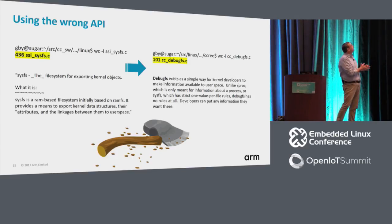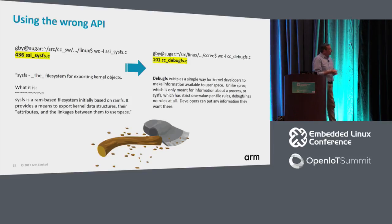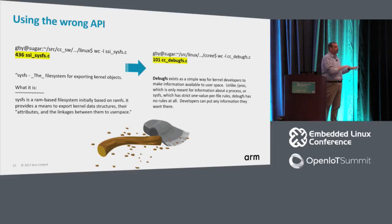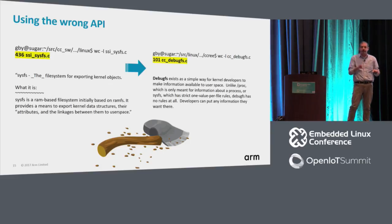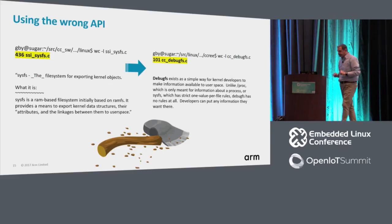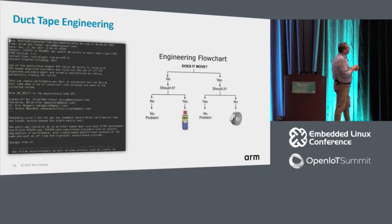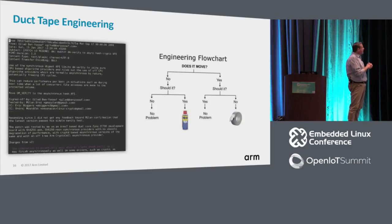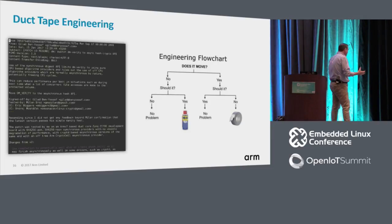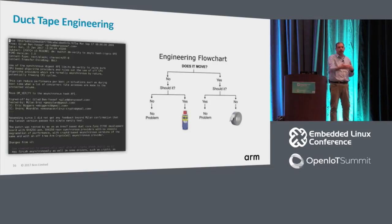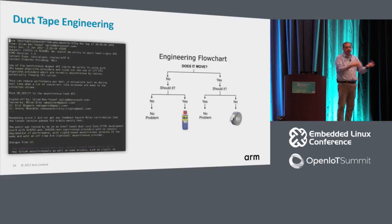Lesson number three: use the right API. The fact that you could do something with a certain API does not necessarily mean it's the right one. Sometimes there are several APIs that may fit, and it's worth the time and effort to ask which one of them is the best. Moving along — what I'd like to call 'duct tape engineering.' We had a device driver that supported some asynchronous hardware that worked with DMA to handle crypto operations.